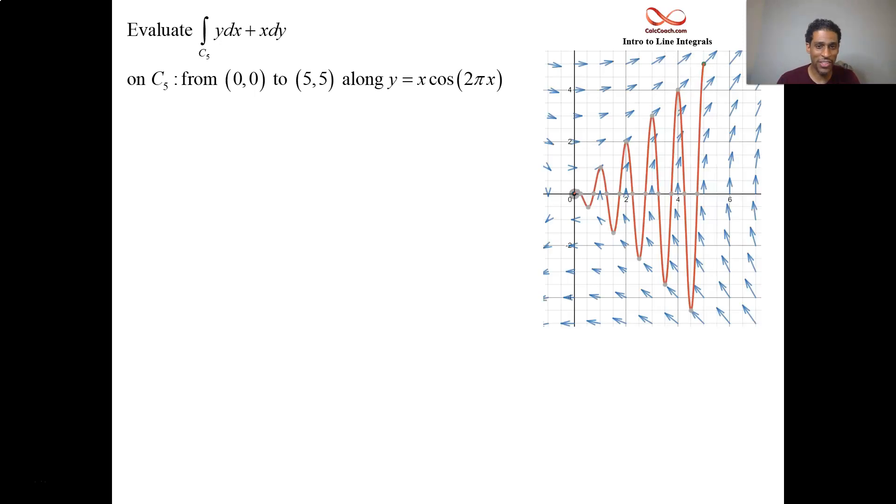Alright, in that path we're going to go along the function y equals x times the cosine of 2πx. Start at the origin, end at 5, 5. Alright, here's the video for that. Same vector field, y for the i component and x for the j component.